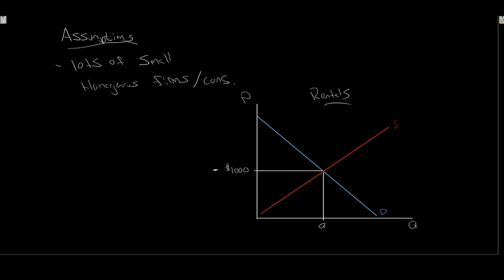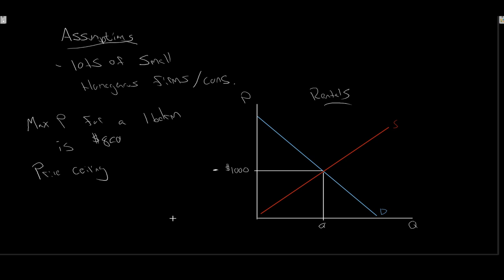Price is $1,000. Suppose the government comes along and says the maximum price for a one-bedroom is only $800. They have imposed what we'll call a price ceiling, saying we are only allowed to have prices for one-bedroom rentals up to $800. You can charge less than $800, but you are not allowed to charge more — this is the ceiling, the maximum possible price. This is legislated law, and if you are found breaking it, there are legal penalties including jail time or fines.